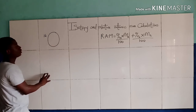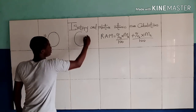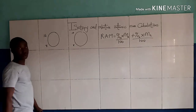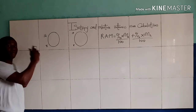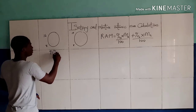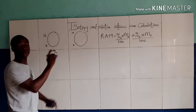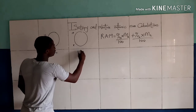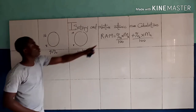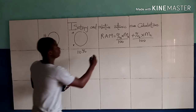Oxygen-16 has atomic number 8, and Oxygen-18 also has atomic number 8. The percent abundance of the first isotope of oxygen is given to be 90%, and the percent abundance of the second isotope of oxygen is given to be 10%. Now let's calculate the relative atomic mass of oxygen using this formula.